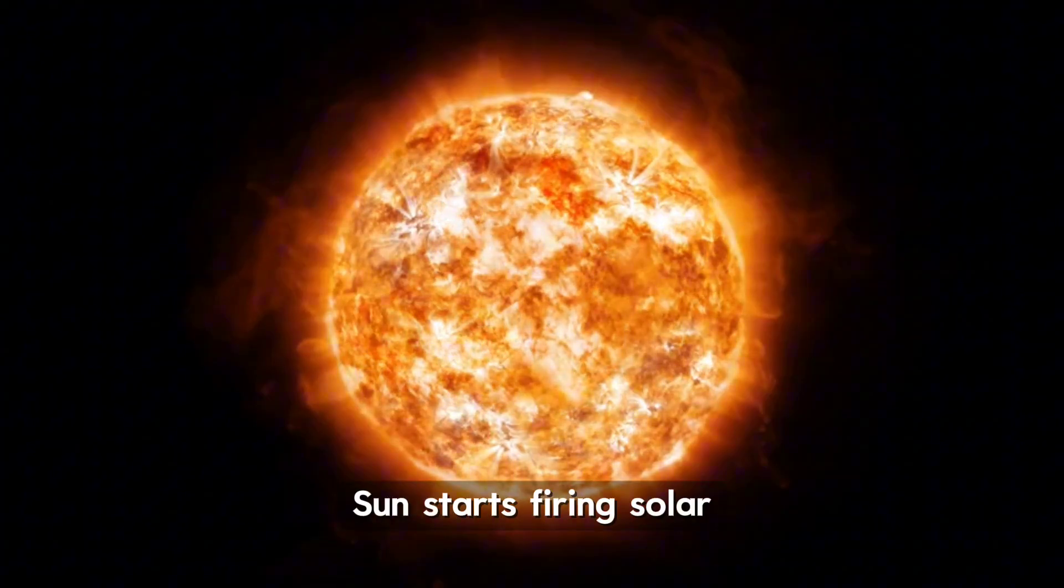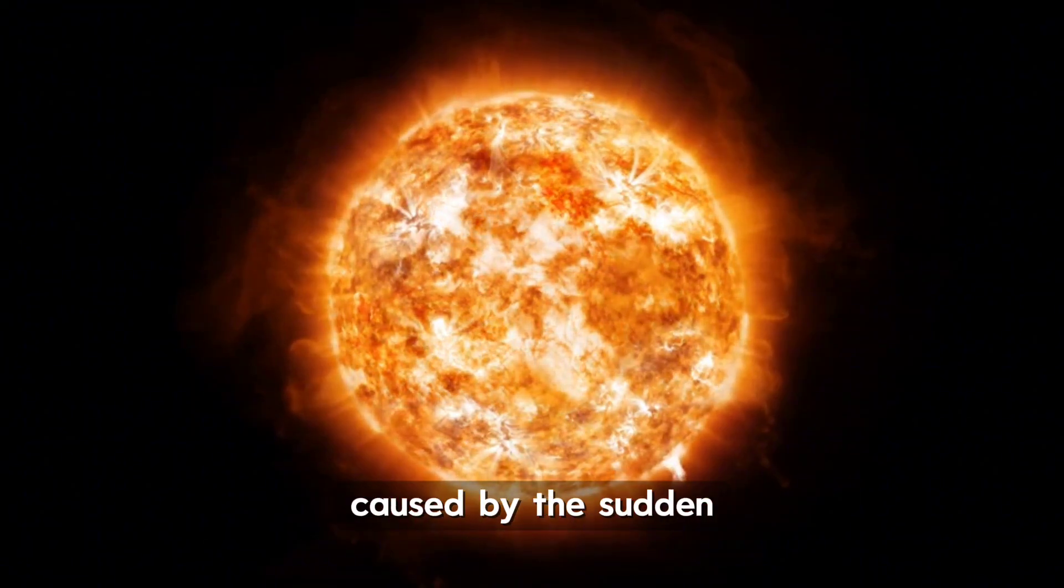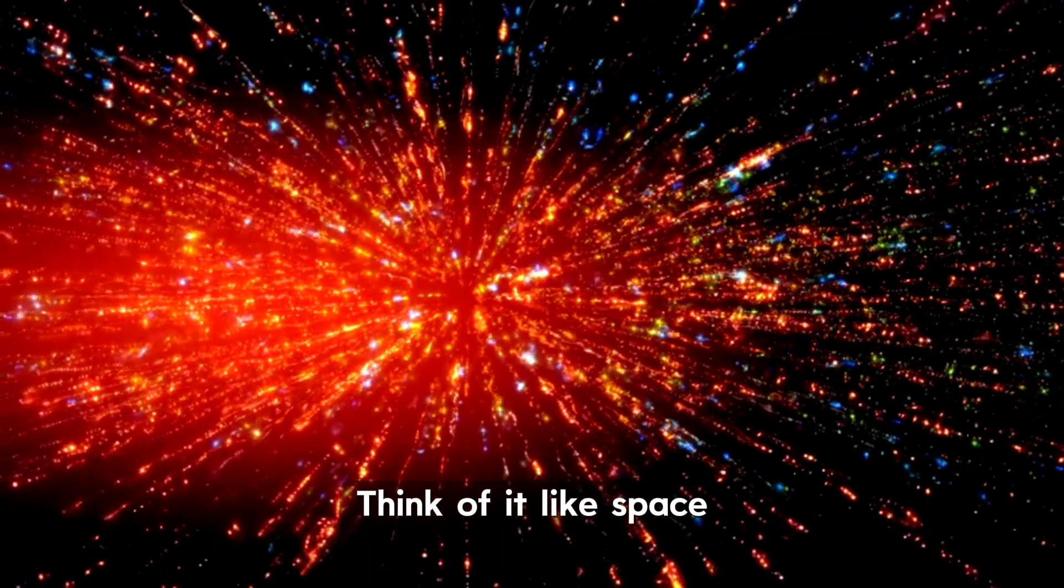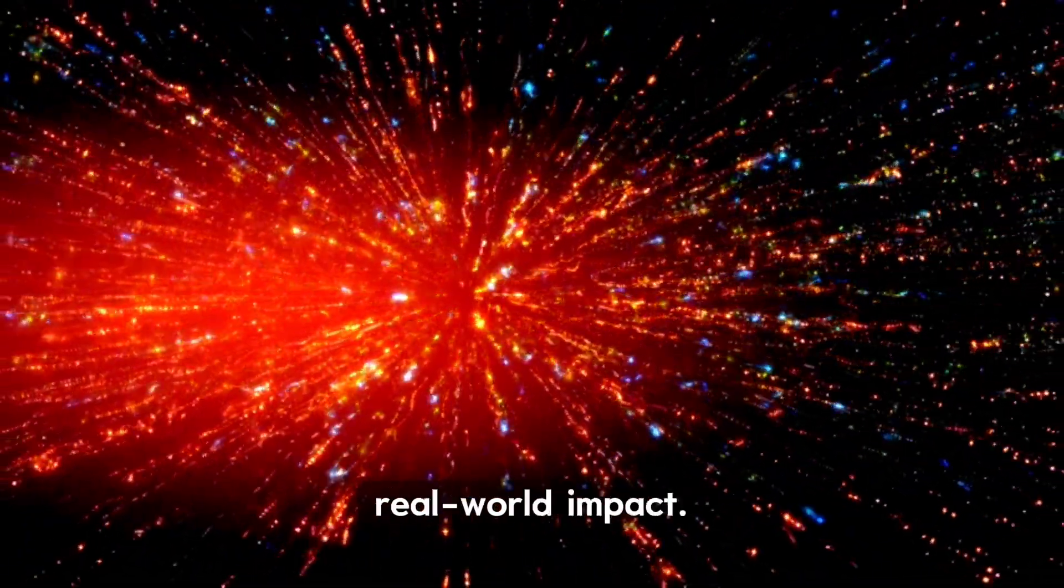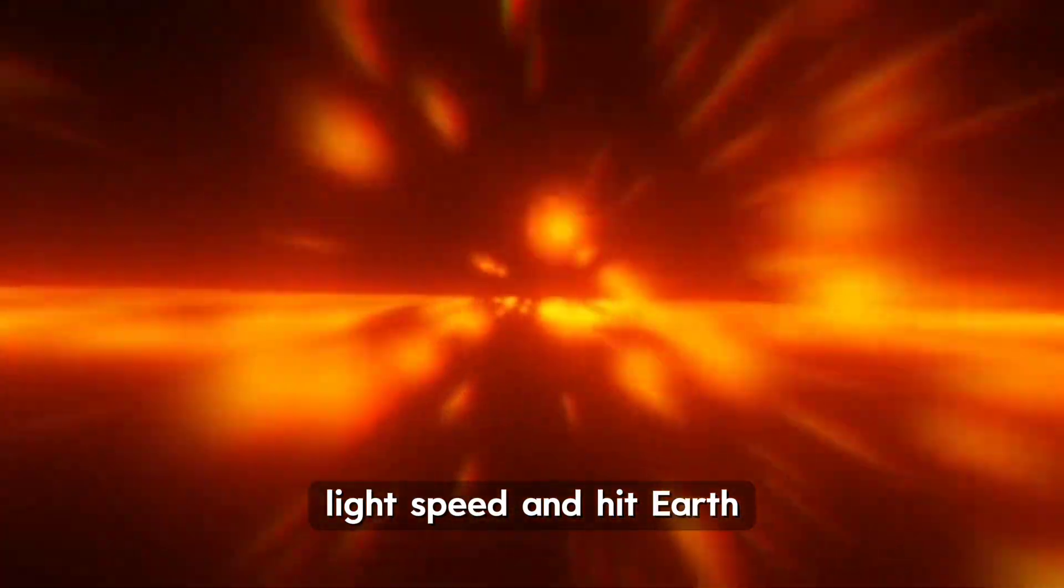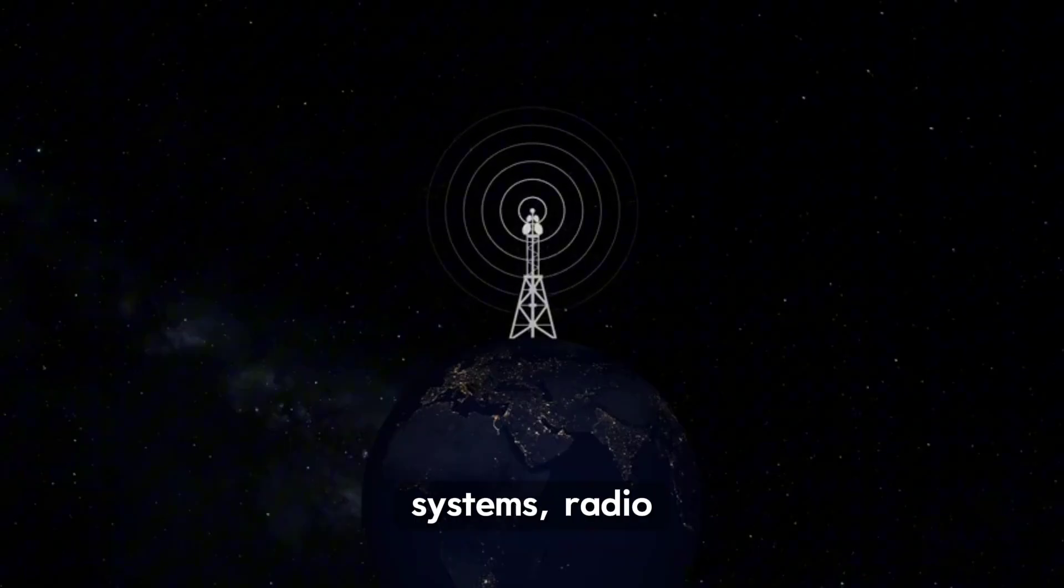During this time, the sun starts firing solar flares—massive bursts of radiation and energy caused by the sudden release of magnetic pressure. Think of it like space fireworks, but with real-world impact. These flares can travel at light speed and hit Earth in just 8 minutes, and when they do, they can disrupt satellites, GPS systems, radio signals, and even power grids.